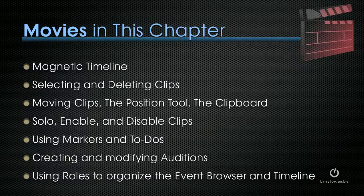There are seven movies in this chapter: using the magnetic timeline, selecting and deleting clips, moving clips, the position tool and the clipboard, solo, enable and disable clips, using markers and to-dos, creating and modifying auditions, and using roles to organize the event browser and timeline.